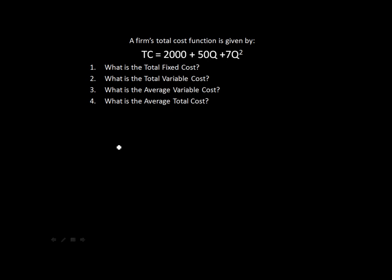The first question: what is our total fixed cost, denoted TFC? The fixed cost part tells you that it does not change with quantity. So if we change quantity, our total fixed cost will remain the same. Looking at our total cost function, the only part that remains the same as we change quantity is the 2,000 — it is a constant. The rest will change as we change Q, which is a variable. So our total fixed cost is 2,000.